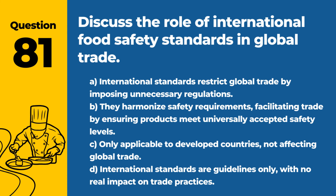Question 81. Discuss the role of international food safety standards in global trade. a. International standards restrict global trade by imposing unnecessary regulations. b. They harmonize safety requirements, facilitating trade by ensuring products meet universally accepted safety levels. Answer: b. They harmonize safety requirements, facilitating trade by ensuring products meet universally accepted safety levels. International food safety standards are crucial for maintaining public health and trust in the global food supply.